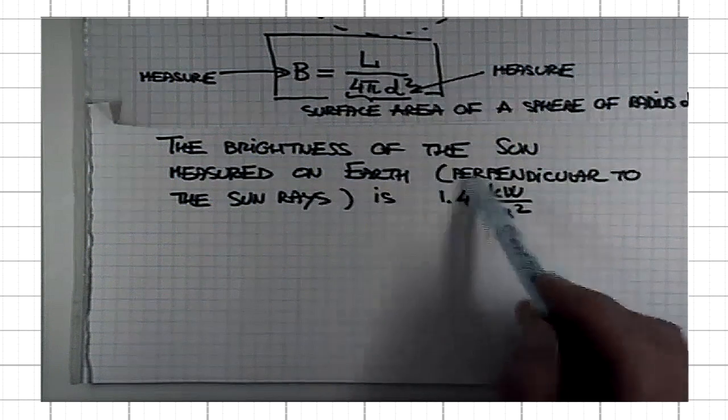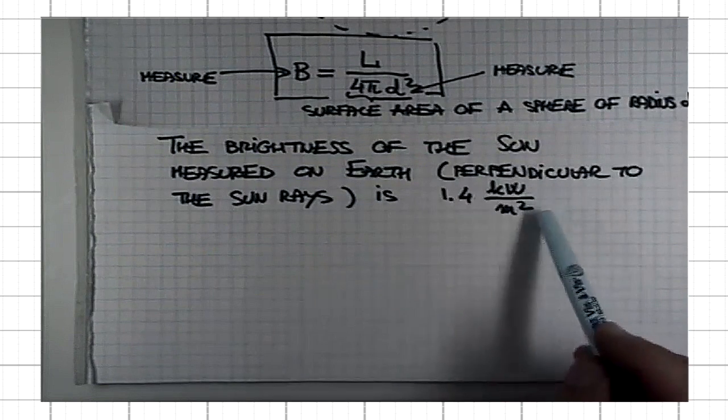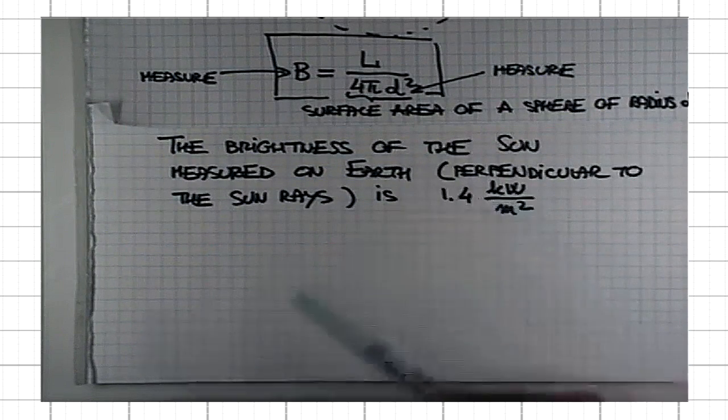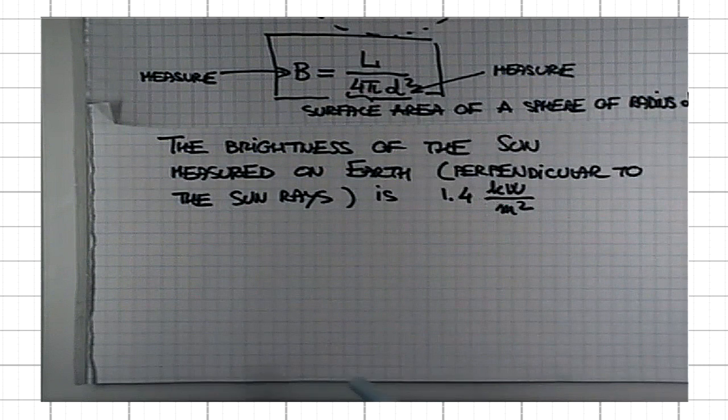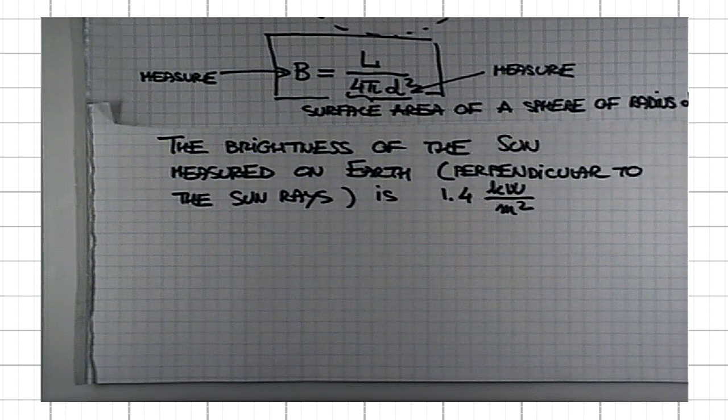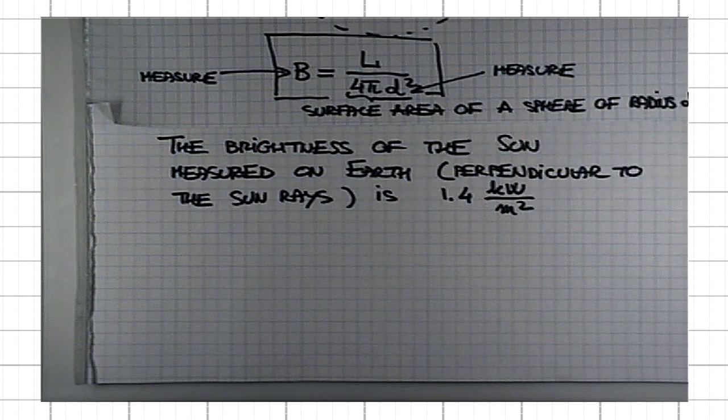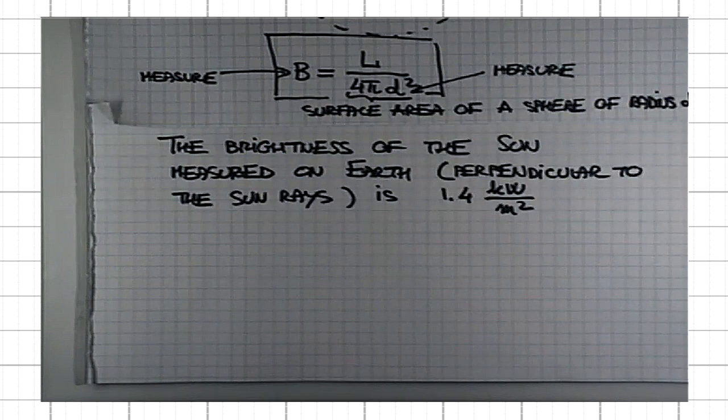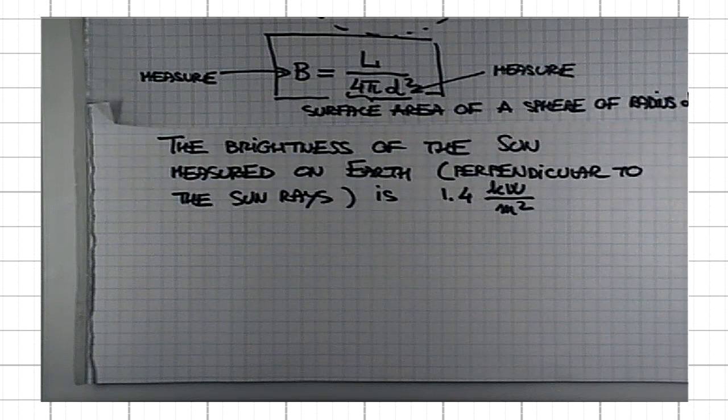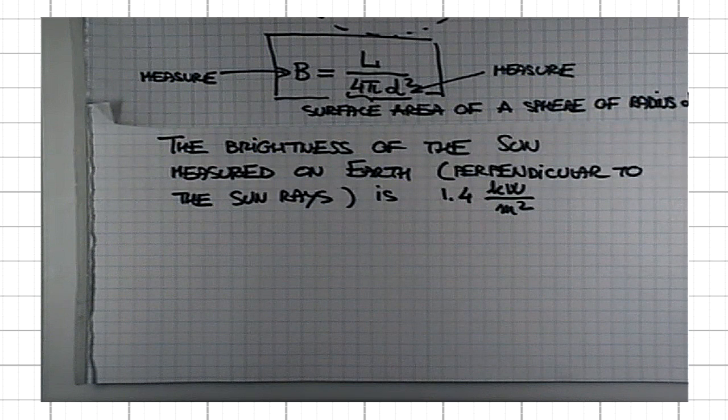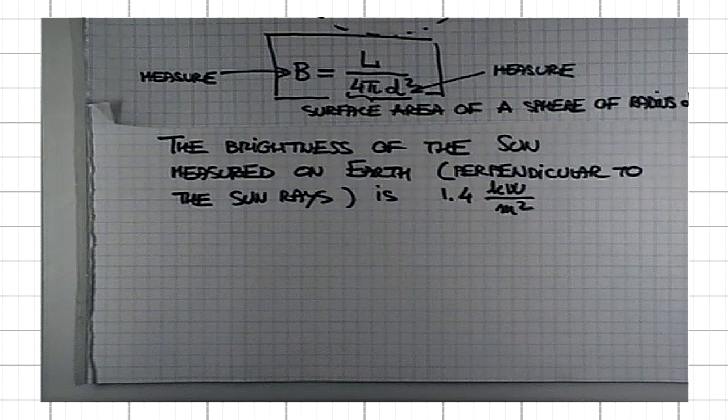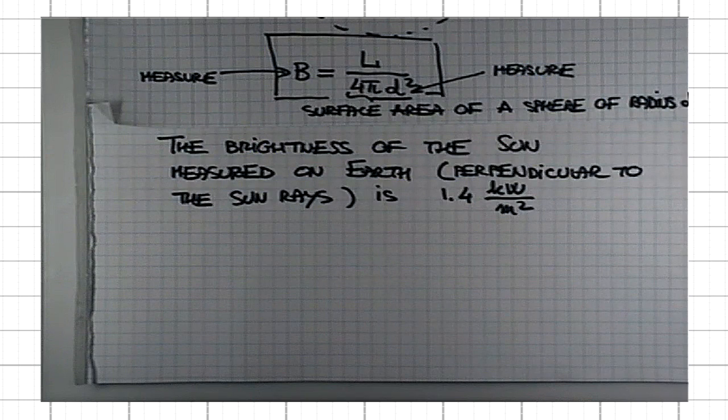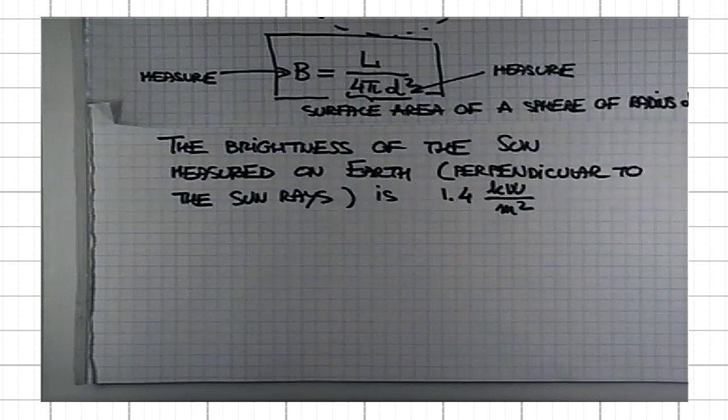That's how, by measuring the brightness of the sun and by knowing its distance from us, 150 million kilometers or one astronomical unit, we can figure out how much energy it produces every second. That's how we know that its luminosity is 4 times 10²⁶ kilowatts.